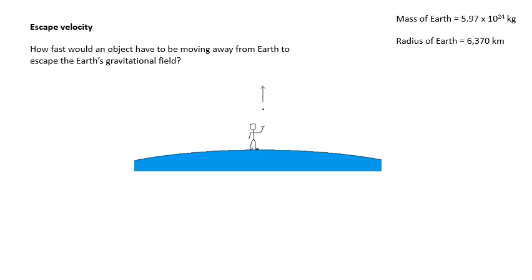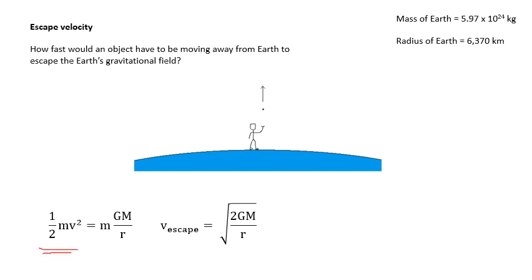This brings us to escape velocity: how fast would an object have to move away from the Earth to escape its gravitational field, ignoring air resistance? That occurs when kinetic energy equals the magnitude of the potential energy: ½mv² = mGM/r. The escape velocity therefore works out as v = √(2GM/r).